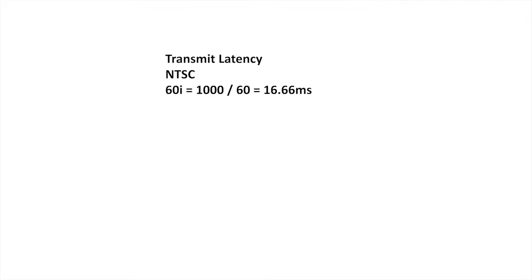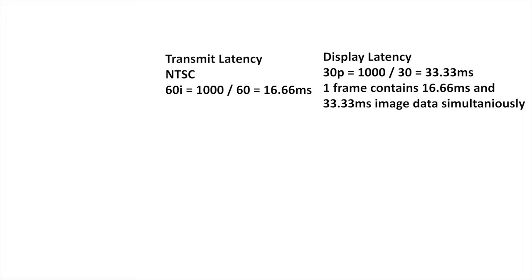By taking how many milliseconds are in a second and dividing by how many frames per second are being displayed in your goggles, you can determine the latency. Ignoring camera processing time, with an NTSC signal you take 60 interlaced frames divided into 1000 milliseconds — that's every 16.66 milliseconds per interlaced frame. Since it needs two of those frames to create a full image, you divide 1000 by 30 frames, resulting in a 33.33 millisecond delay between each frame.